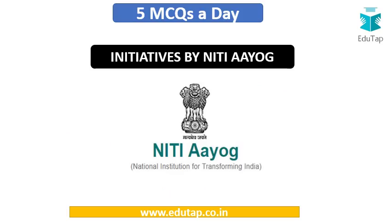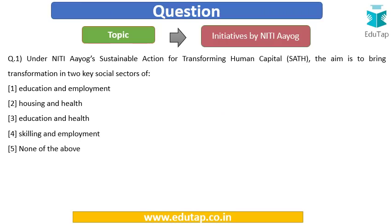Let's start our discussion on the topic of initiatives by NITI Aayog. First question: Under NITI Aayog's Sustainable Action for Transforming Human Capital — that is SATH — initiative, the aim is to bring transformation in two key social sectors. Options are: education and employment; housing and health; education and health; skilling and employment; or none of the above.